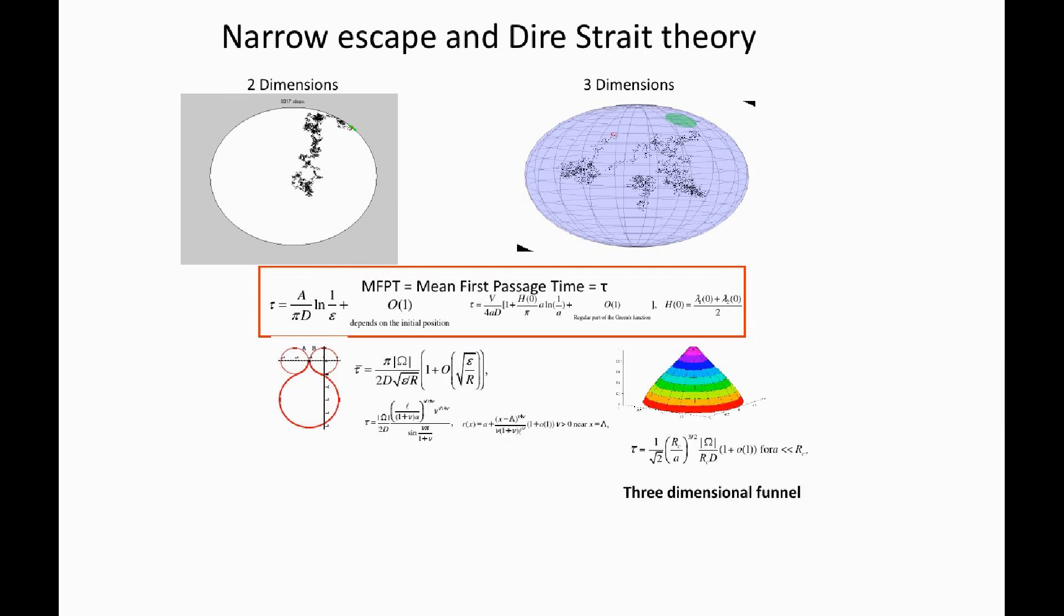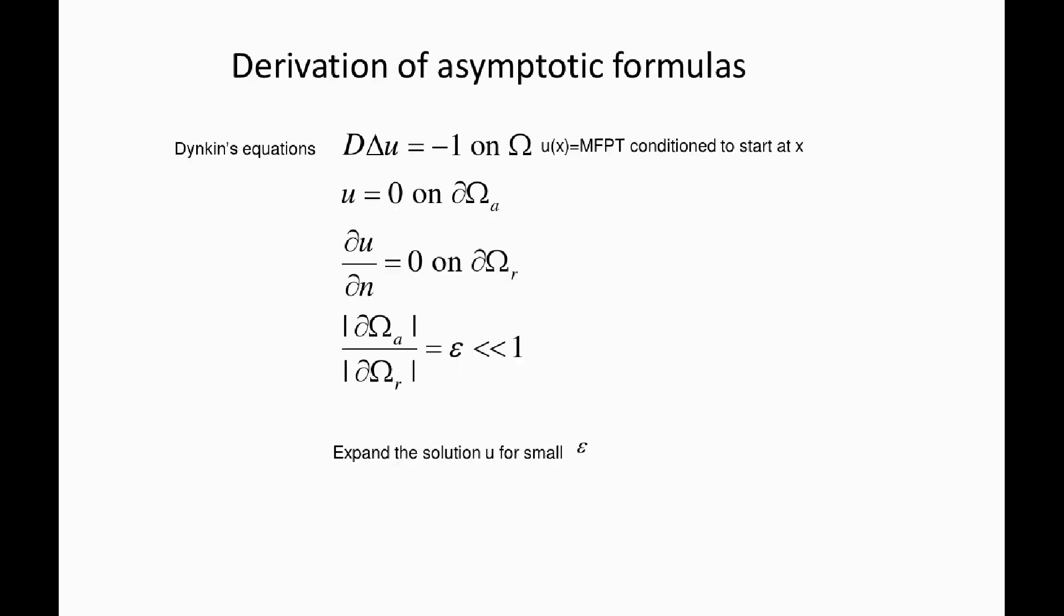Finally, we will continue in this third class about what happened in dimension two with the cusp. What happens when you have a cusp in dimension three? We will see that instead of having in dimension three a time which is proportional to one over a, it's now proportional to one over a to the power three halves.